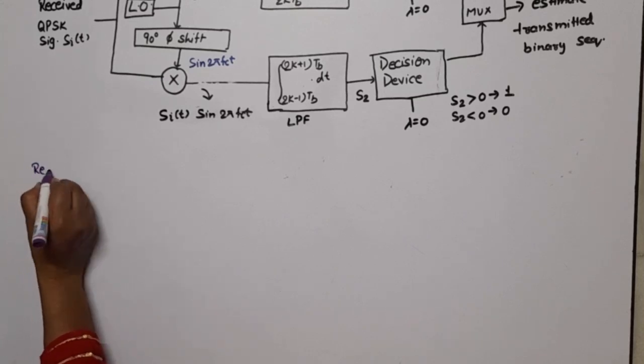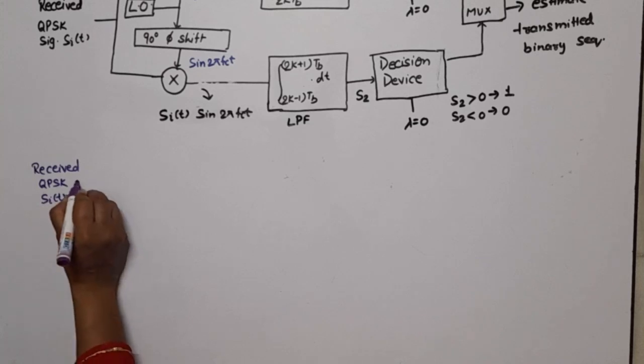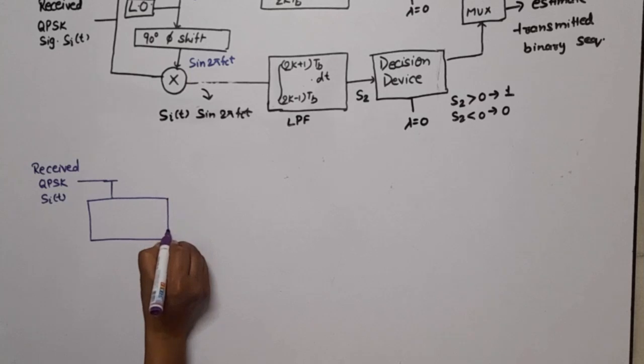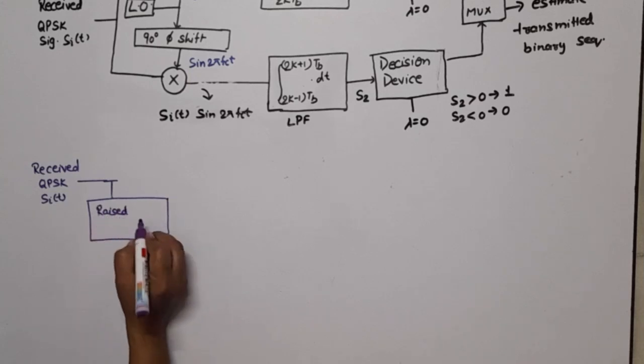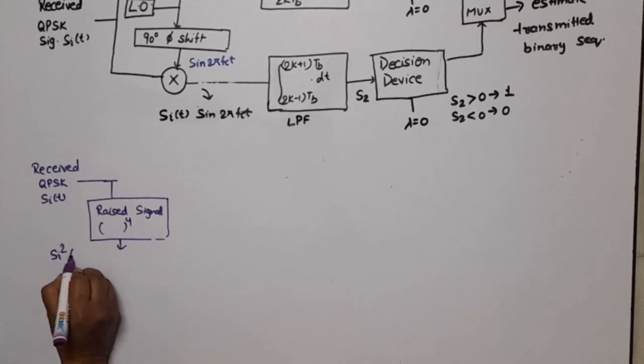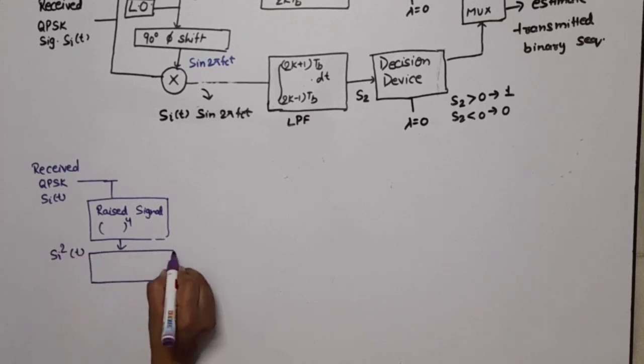We have the received QPSK signal si(t). This signal is applied to one device which raises the signal to the fourth power. The output of this will be si²(t). This is applied to a band pass filter.